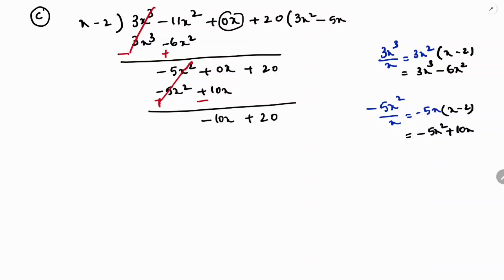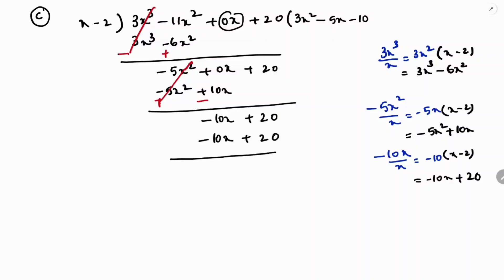Divide -10x by x to get -10. Multiply -10 with x - 2: -10x and -10 × (-2) = +20. So we get -10x + 20. Subtract: both -10x and +20 cancel completely, remainder is 0. So the answer is 3x² - 5x - 10.